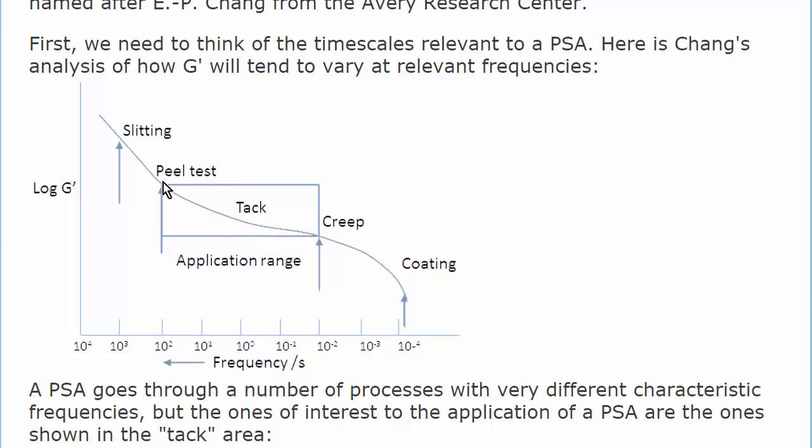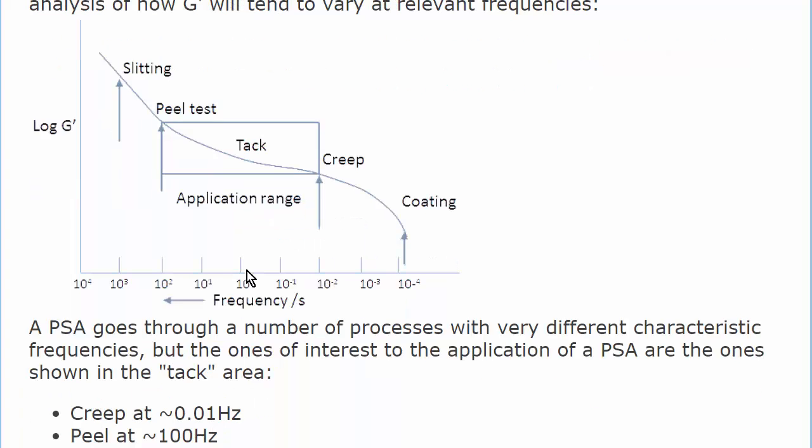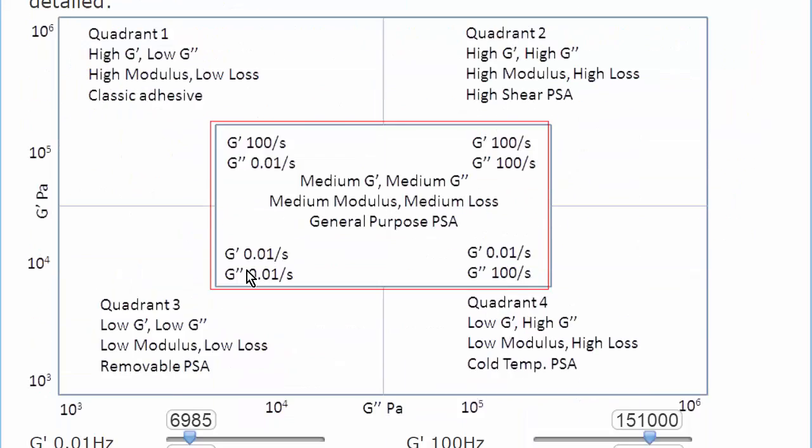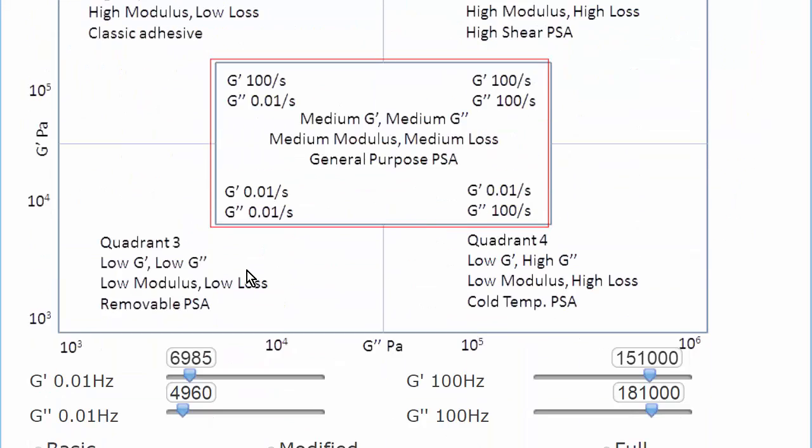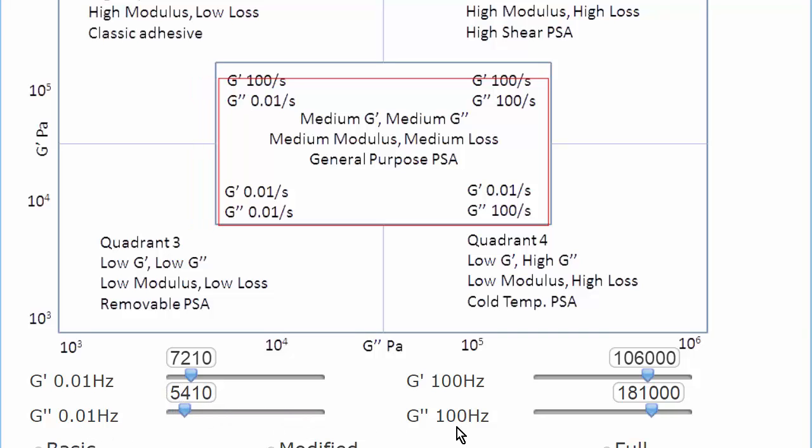So you need properties which, in this range, allow you to do the right thing. Chang realized that you had a choice. You can have G prime, which is the elastic modulus, in some range, depending on G prime at 0.01 Hz at the creep rate, or at 100 Hz at the peel rate. But also the G double prime, the loss modulus, which is also at the 0.01 Hz or the 100 Hz.